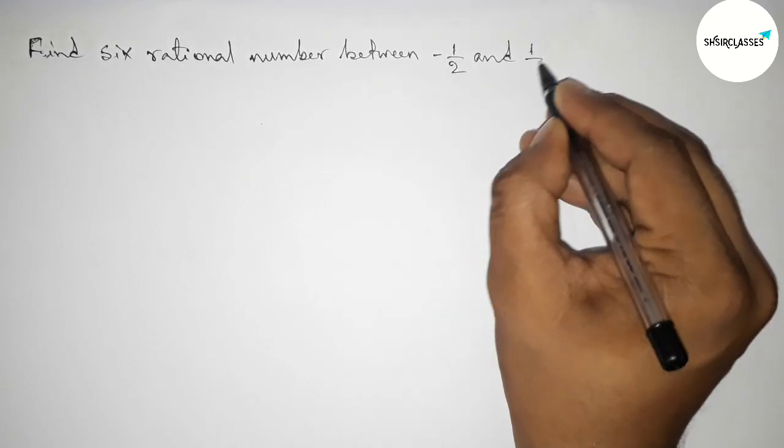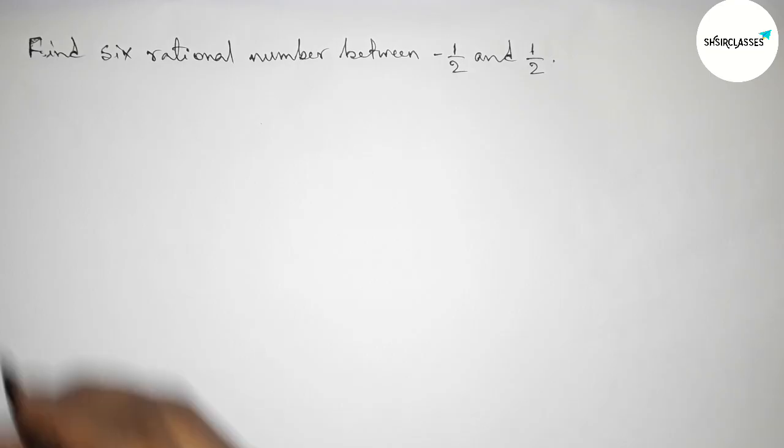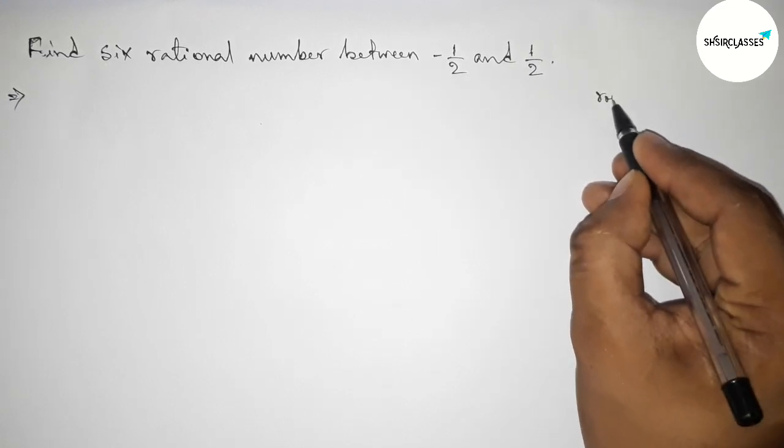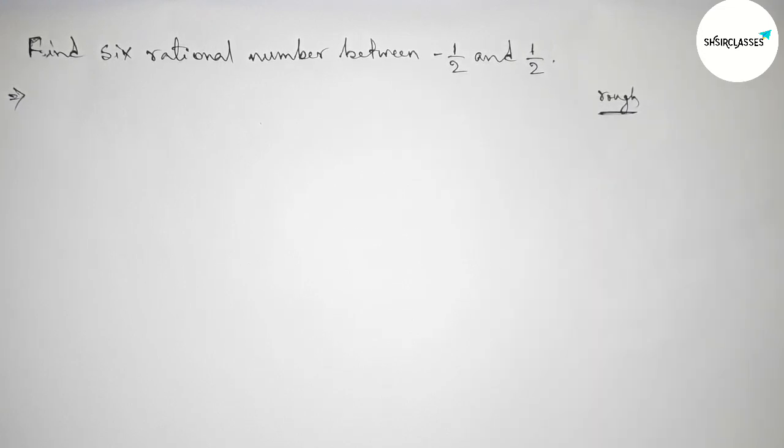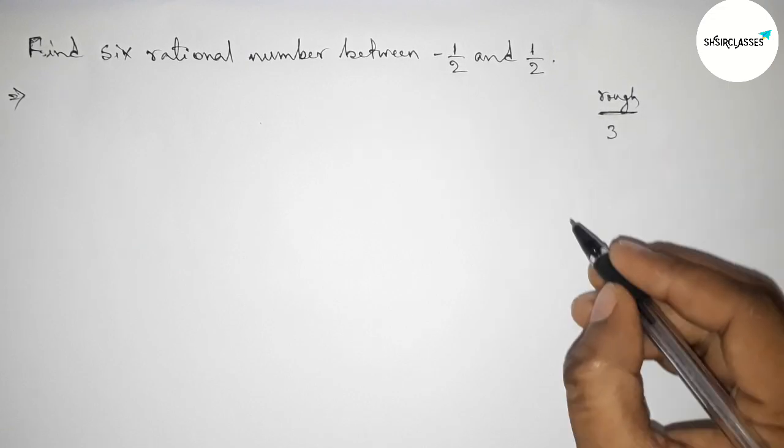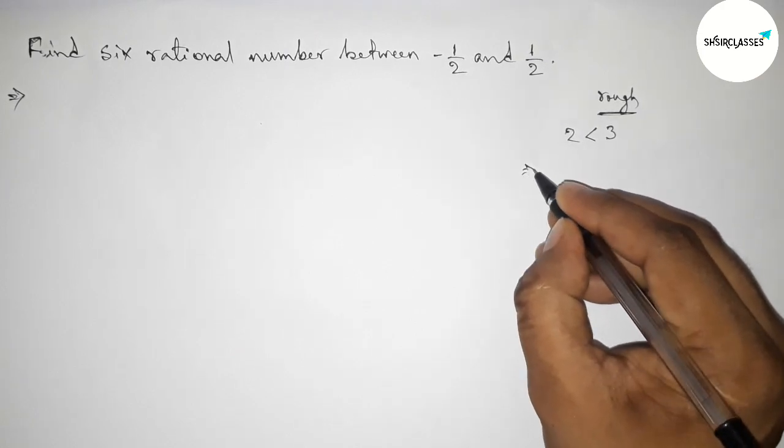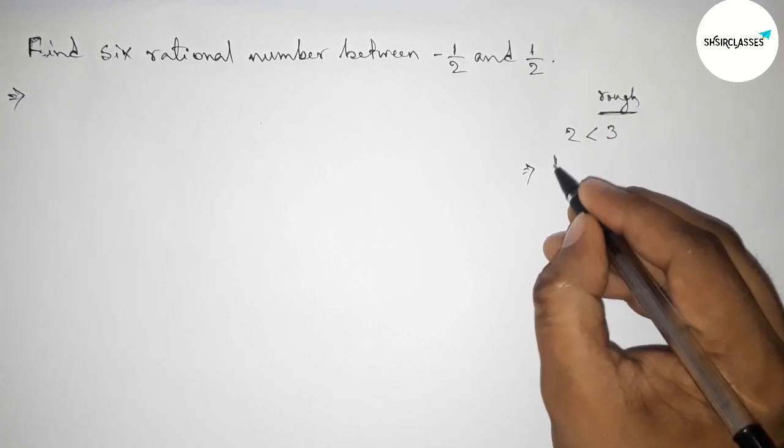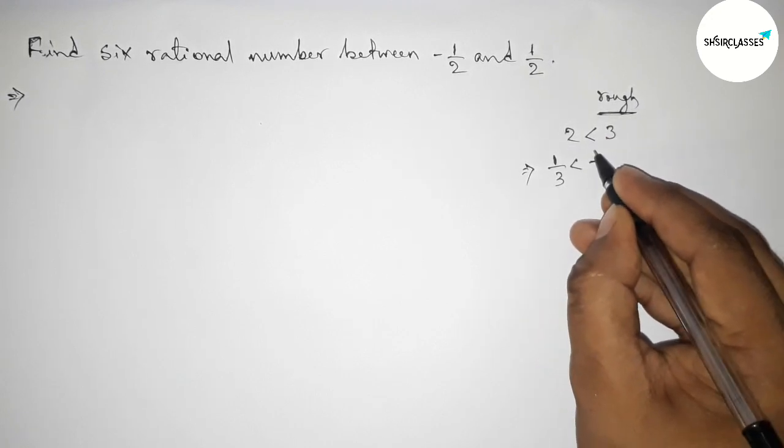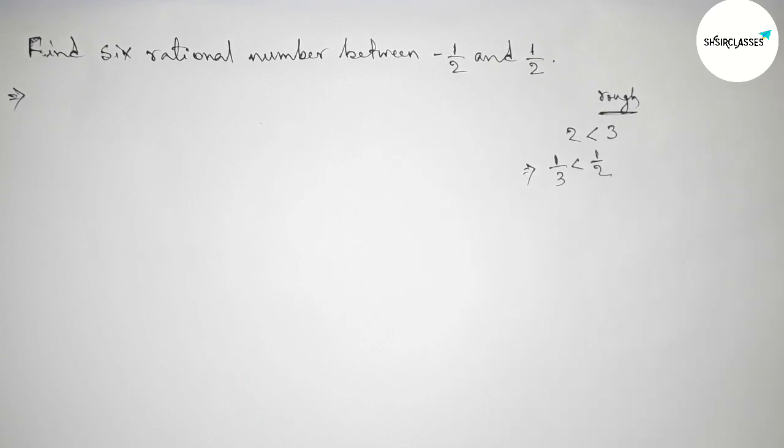First of all, let us solve this problem. Now roughly discussing here some important calculations. First, taking here a number 3 which is greater than 2. Now taking the inverse of both numbers, then the inequality will be changed. That is 1 by 3 less than 1 by 2.